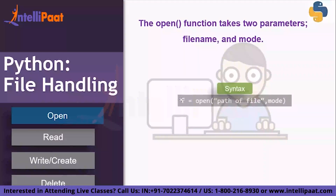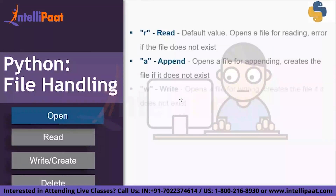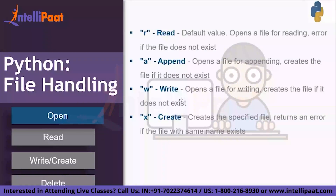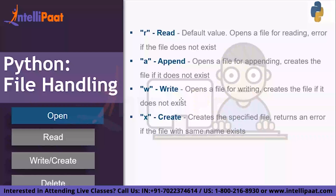There are four different types of modes: read, append, write, and create. For reading, you specify 'r'. It's the default value and it opens the file for reading. If the file does not exist, it will return an error.